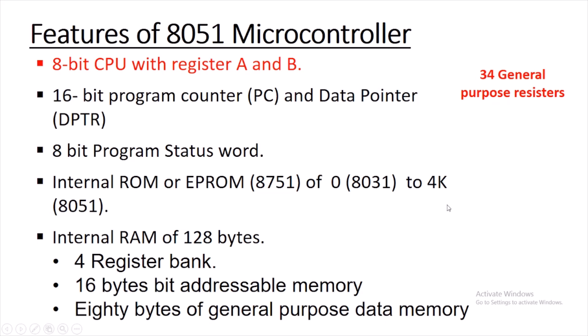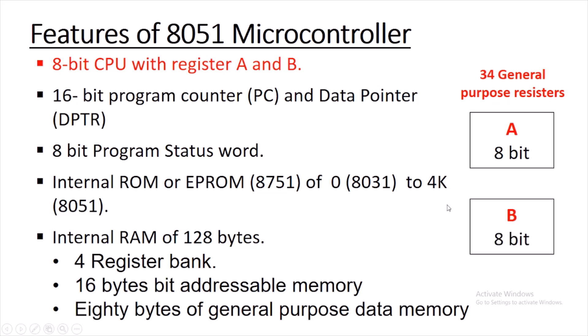Register B is also a general purpose register which is used to perform multiplication and division operations only. When 8051 wants to perform multiplication and division, register B is used. We will see how register B is used in those operations later. Both register A and register B are 8-bit registers.